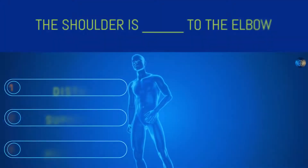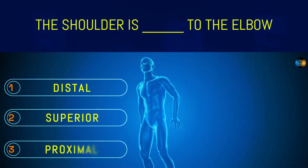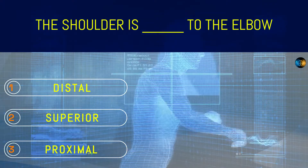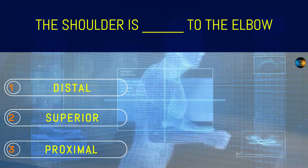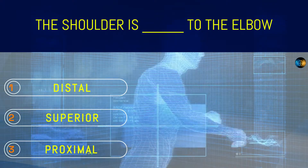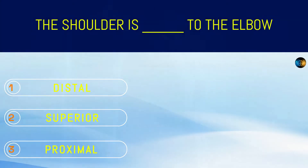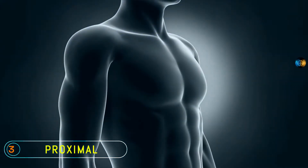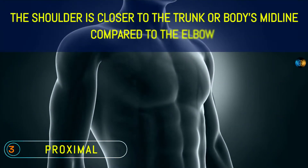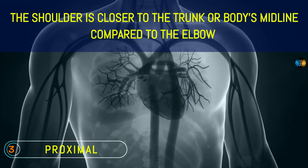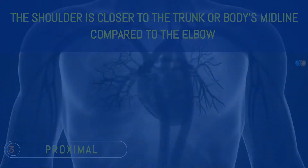The shoulder is what to the elbow? Distal, superior, or proximal? Proximal. The shoulder is closer to the trunk or body's midline compared to the elbow.